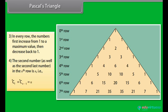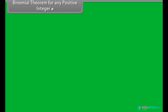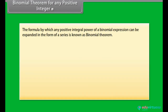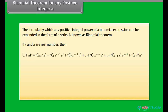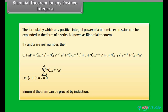Binomial theorem for any positive integer n: the formula by which any positive integral power of a binomial expression can be expanded in the form of a series is known as the binomial theorem. If x and a are real numbers, then (x + a)ⁿ = Σ (r=0 to n) nCr · x^(n−r) · aʳ.